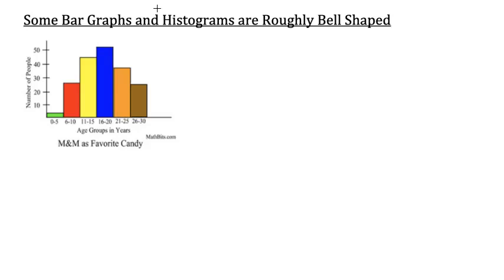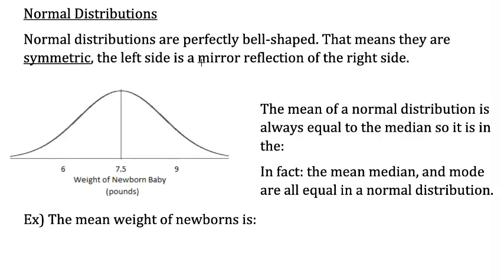Some bar graphs and histograms are roughly bell-shaped, with a peak in the middle and the bars spread out evenly on both sides. Sometimes we use smooth curves to approximate the shape of these distributions. Many distributions are shaped this way — for example, the weights of newborn babies. In statistics, we use normal distributions to model these patterns.